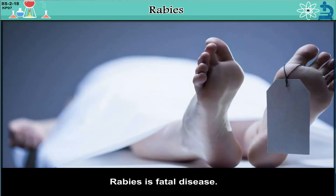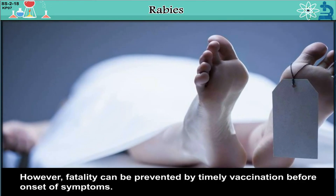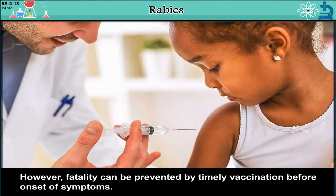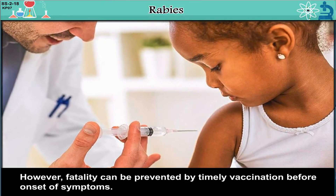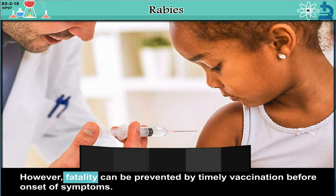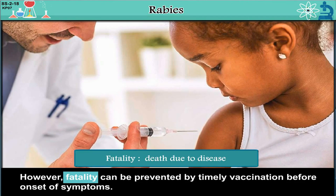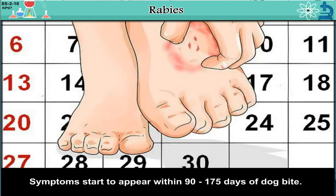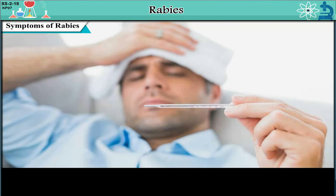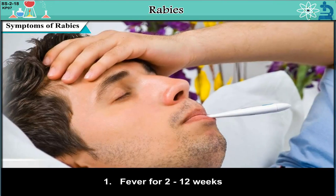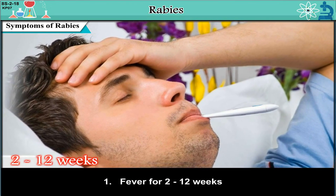Rabies is a fatal disease. However, fatality can be prevented by timely vaccination before the onset of symptoms. Fatality means death due to disease. Symptoms start to appear within 90 to 175 days of a dog bite. Symptoms of Rabies: 1. Fever for 2 to 12 weeks.